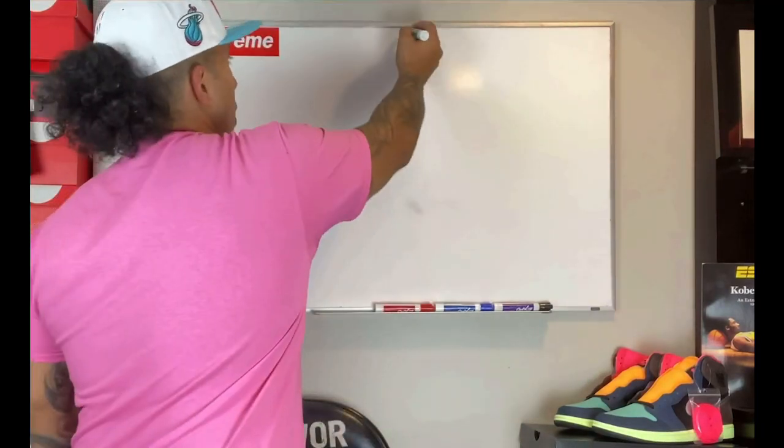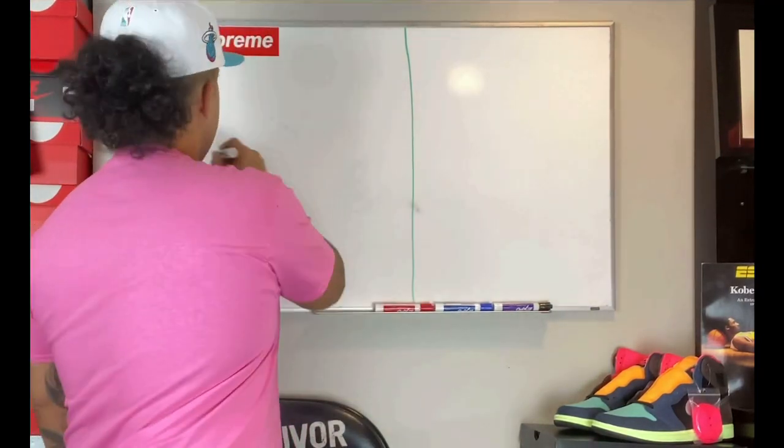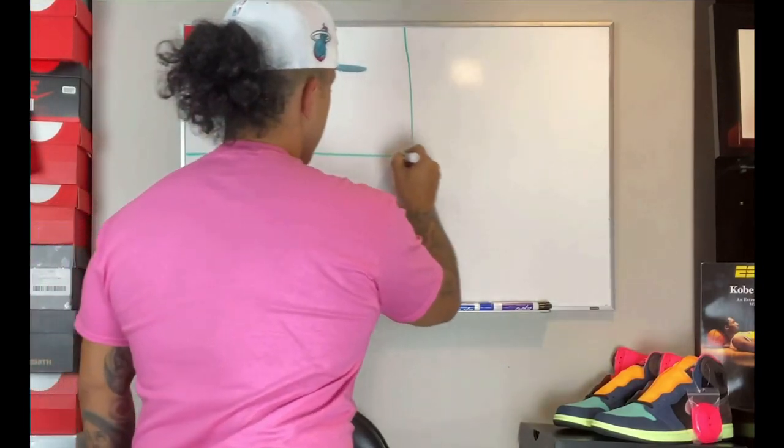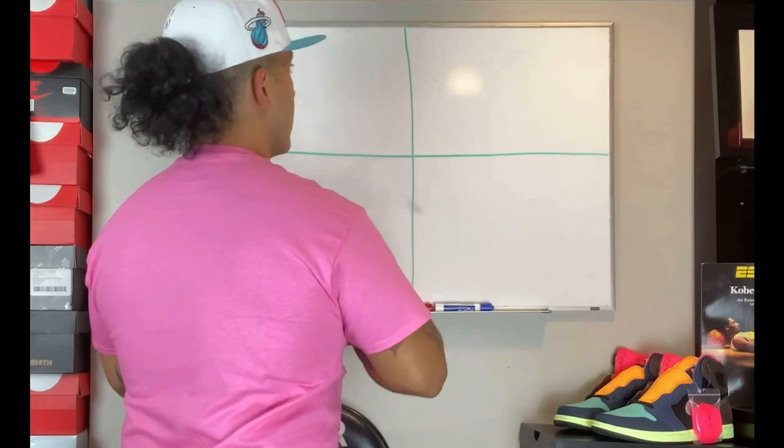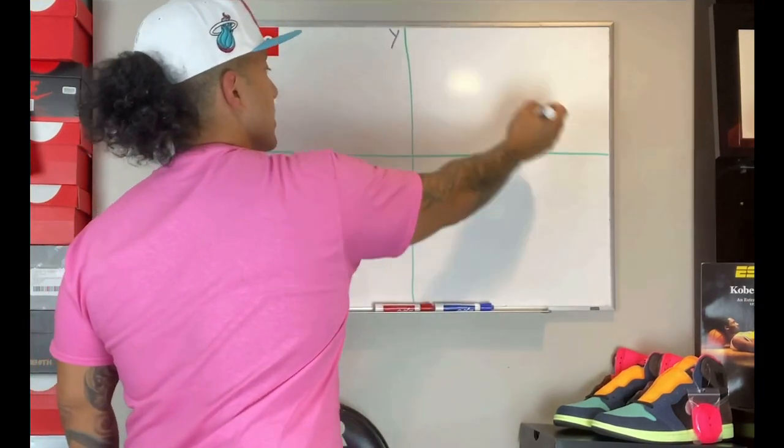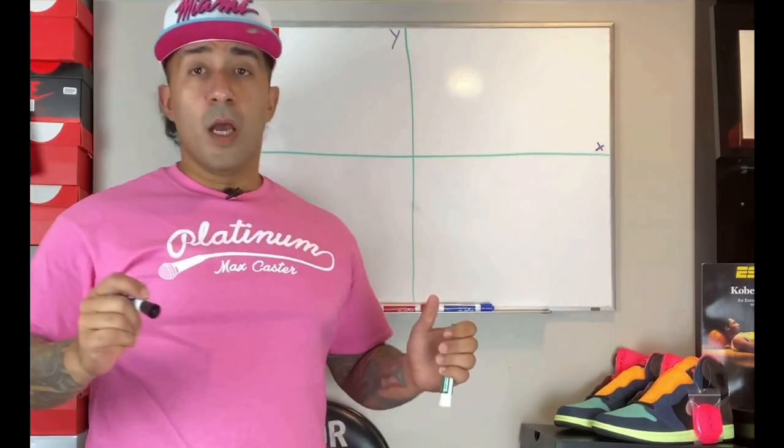axes. We have the y-axis, which is vertical, and we have the x-axis, which is horizontal. When I create my grids, I always like to label it. I have my y-axis, I have my x-axis. Now, as a way to